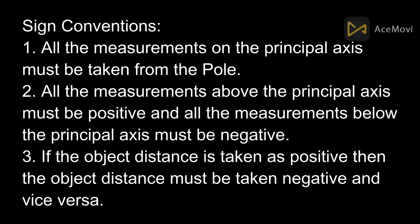Minus v is the distance of the image and u is the distance of the object. Now we also need to learn about the sign conventions. There are mainly three sign conventions and they are the following: All the measurements on the principal axis must be taken from the pole.